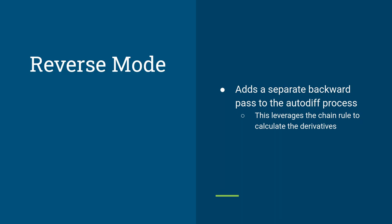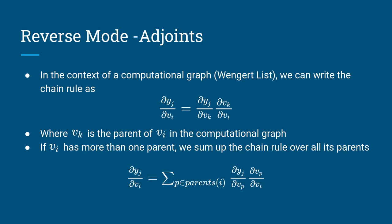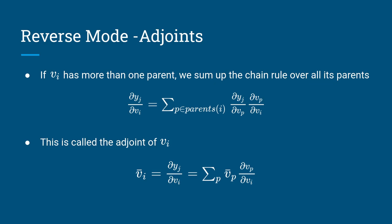Another way to perform autodiff is reverse mode. It adds a separate backward pass to the autodiff process, leveraging the chain rule to calculate derivatives. The chain rule allows you to decompose the derivative of an output with respect to an input by adding intermediate steps: the derivative of the output with respect to an intermediate function, multiplied by the derivative of the intermediate function with respect to the input. Applied to the computational graph, the derivative of the output with respect to an input node is the sum of the chain rules over all its parents. We call that value the adjoint — the adjoint of a node is the sum of the adjoints of each one of its parents, multiplied by the derivative of the parent with respect to the child.